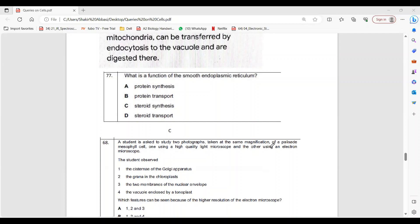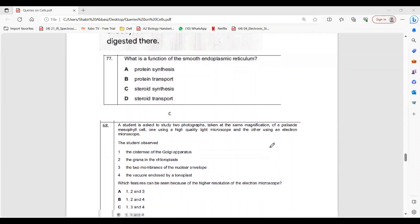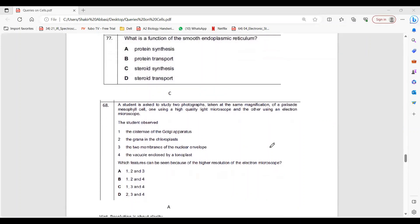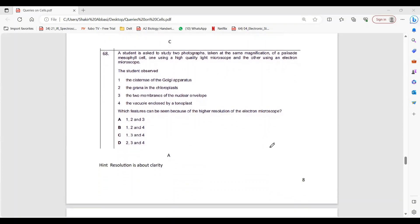77 is C, because steroid - SER only makes steroids. So their transport is not the job of SER, that is done by cyclosis. I mean the movement of microtubules creates a current that makes steroid products go to Golgi and other parts.